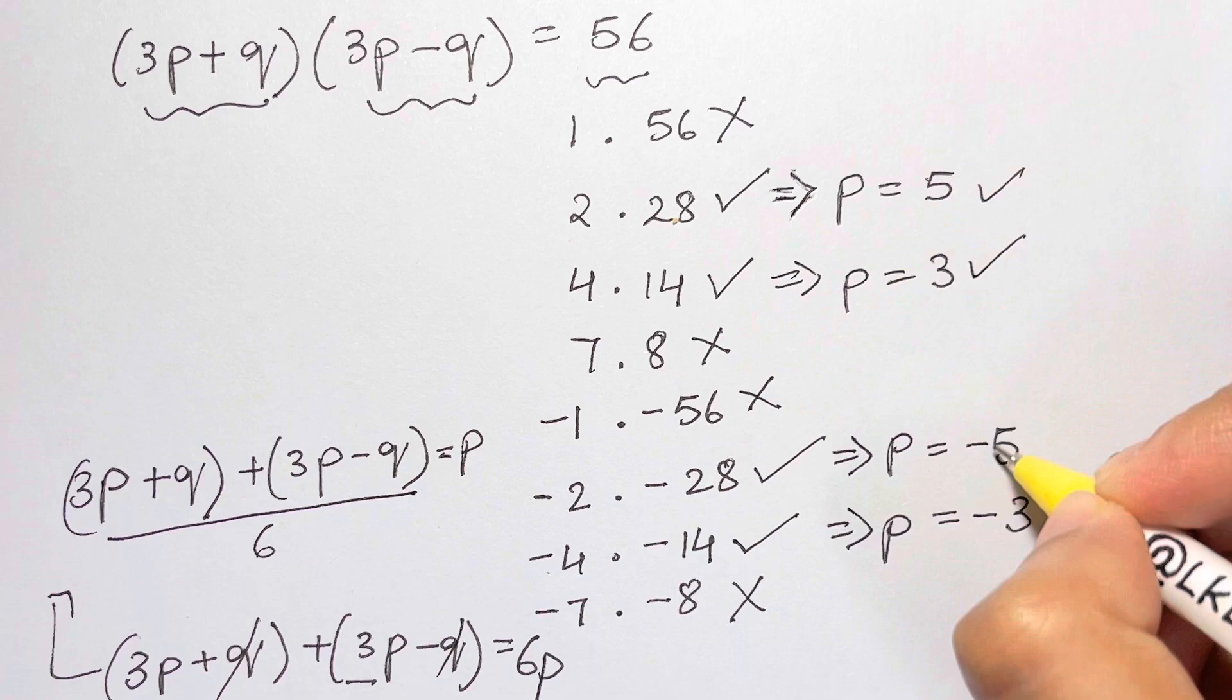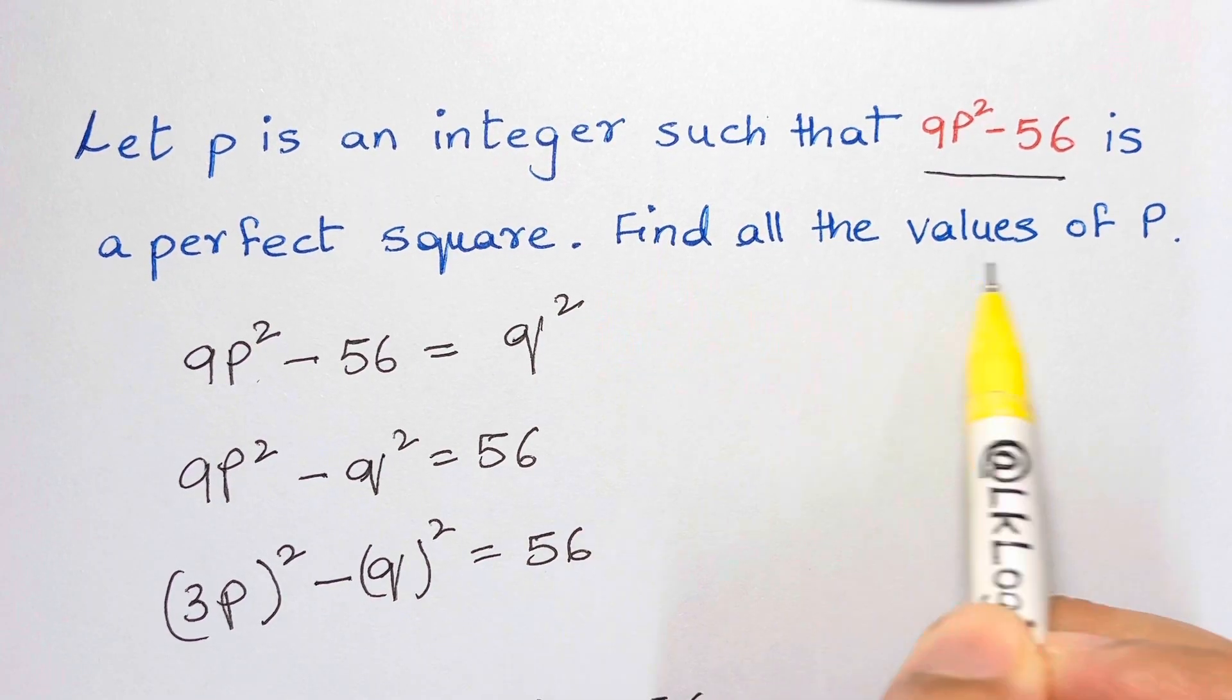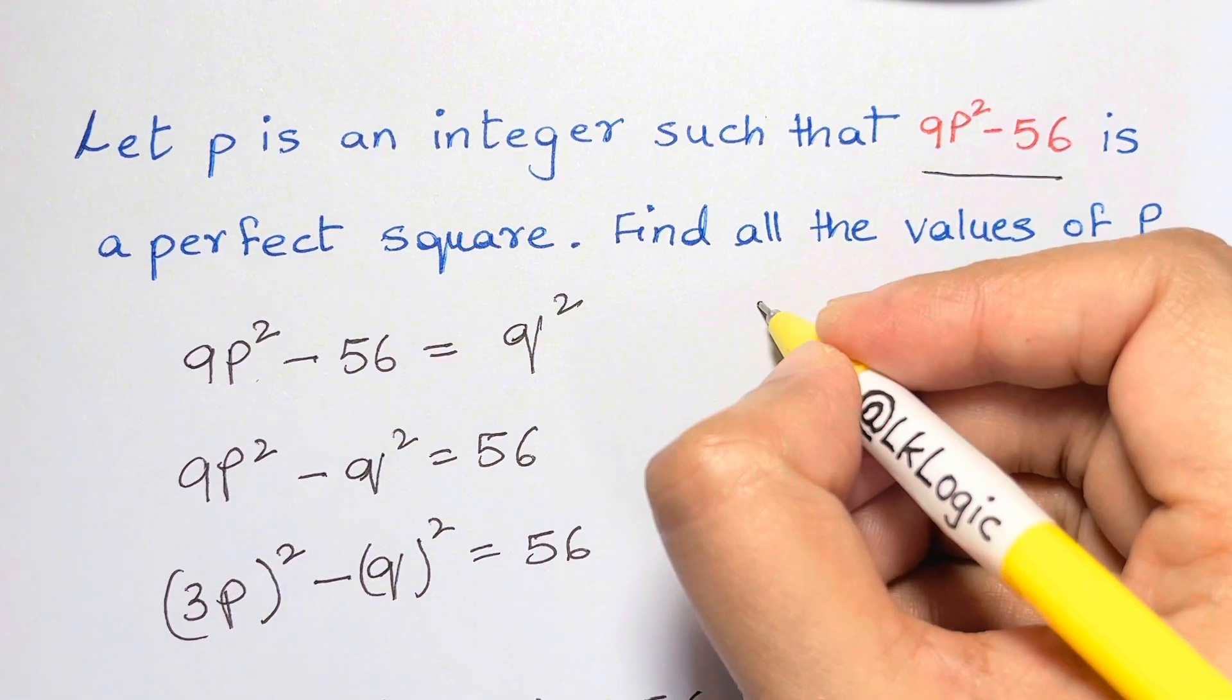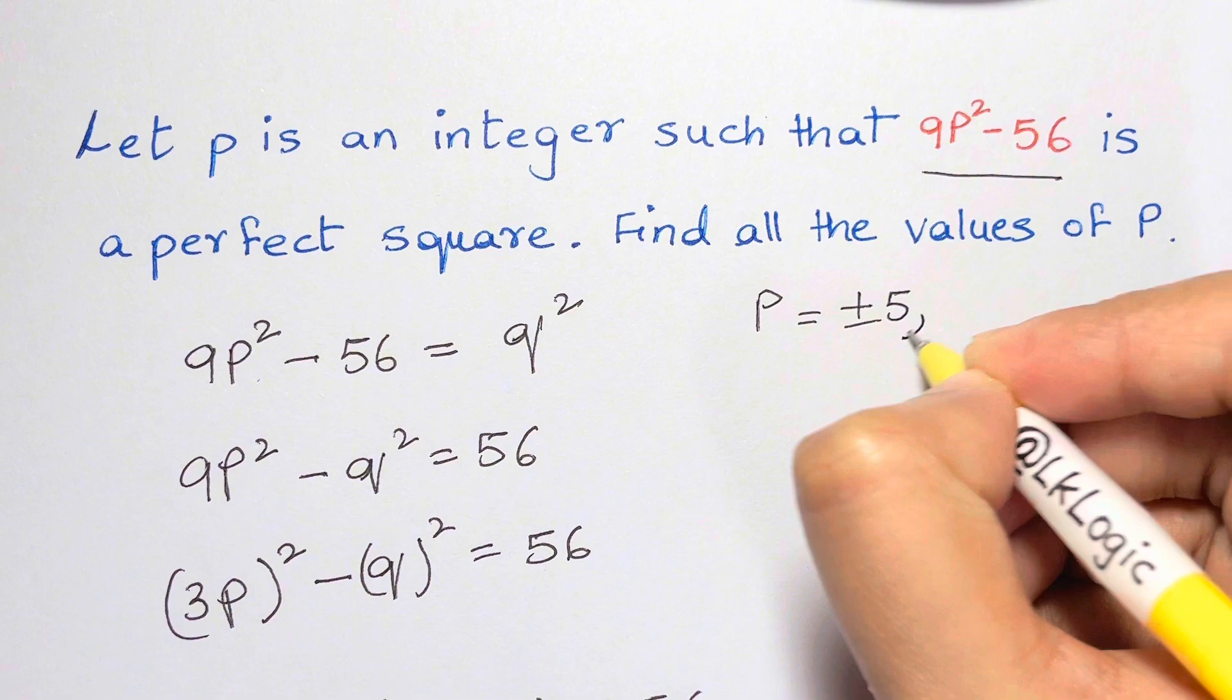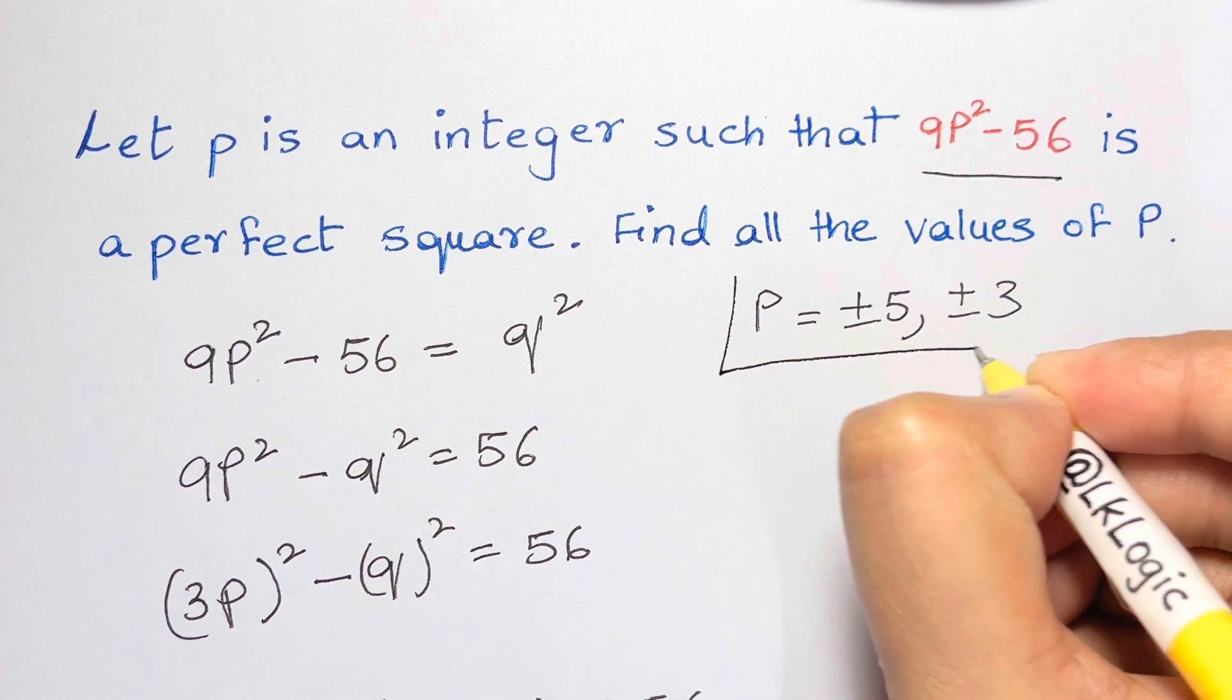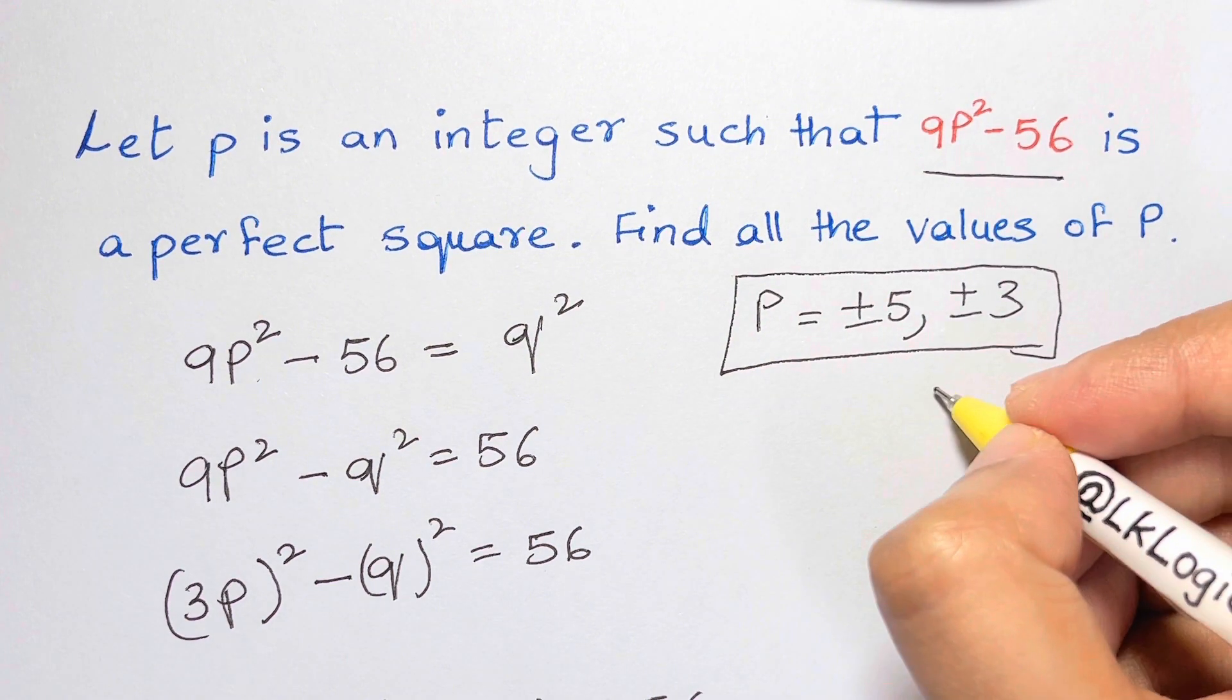The problem asked to find all the values of p, so p = ±5, ±3. That's your answer. Thank you so much for watching, bye bye, take care.